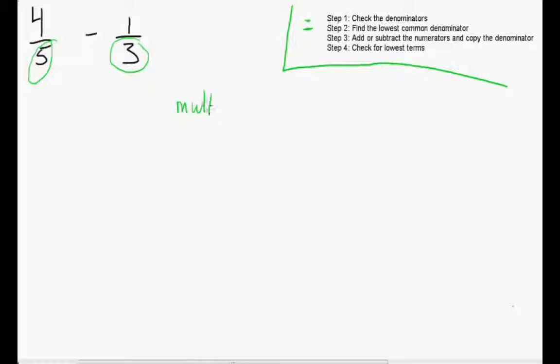In order to do that, we need to list the multiples of both denominators. So the multiples of 5 are 5, 10, 15, and they keep going. And the multiples of 3 are 3, 6, 9, 12, 15, and they keep going. What we're looking for is the lowest common denominator, so we're going to find the lowest common multiple. Here we see it's 15.